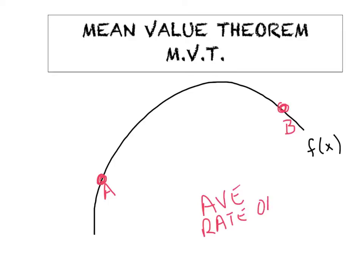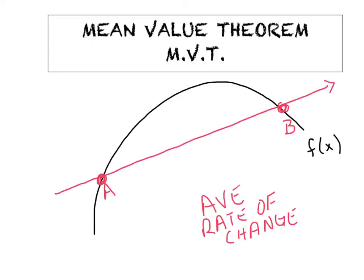So average rate of change is, in other words, the average slope of the function between A and B, is simply represented by the secant line that connects point A to point B, just like that. And what we're basically saying is that this function has a lot of positive slopes, it's got some negative slopes, and all in all, it averages out to be the slope of the red line. Now, what I want you to do is I want you to try to visualize a tangent line that just happens to be parallel to the average rate of change. And I'm imagining maybe a point right around here is a tangent line that happens to be parallel to the red line.